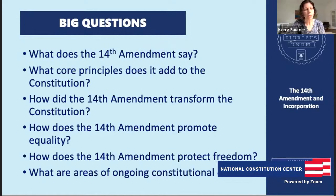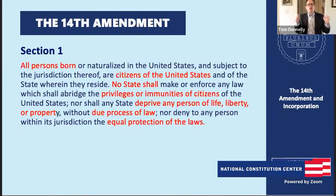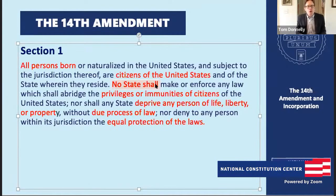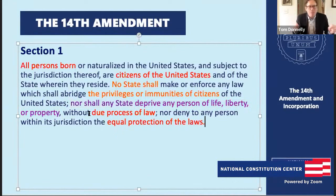Let's go to the text and then get to the big idea. So the 14th Amendment — this is Section 1. It's a big wall of text, but let's read it together. 'All persons born or naturalized in the United States and subject to the jurisdiction thereof are citizens of the United States and of the state wherein they reside.' We call that first sentence the citizenship clause. The second sentence has three clauses: the privileges or immunities clause, the due process clause — 'nor shall any state deprive any person of life, liberty, or property without due process of law' — and the equal protection clause — 'nor deny to any person within its jurisdiction the equal protection of the laws.'